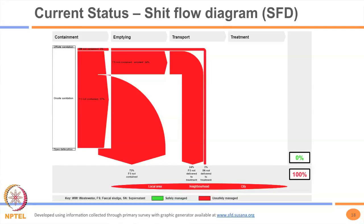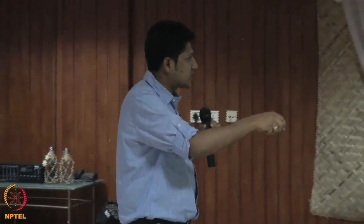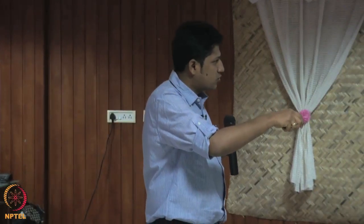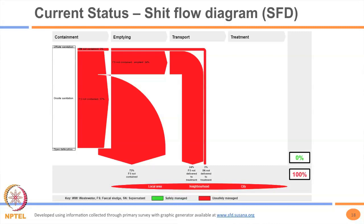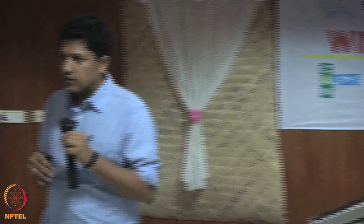This is a Shit Flow Diagram based on our analysis. The SFD methodology was developed by researchers worldwide, funded by the World Bank and the Gates Foundation. On one side it shows the type of containment system — all sanitation is on-site, there is no off-site sanitation and no open defecation in the town. All waste is contained on-site; part of it is emptied, but whatever is emptied goes to the environment without any treatment. Whatever is not emptied is also not considered safe in the pit.